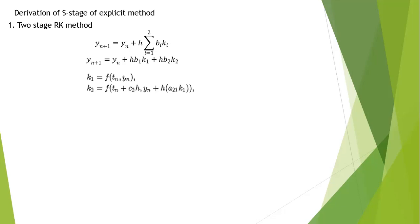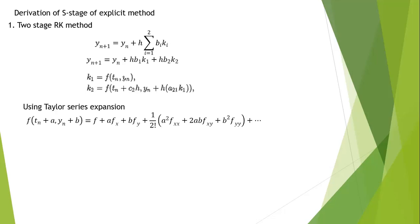We use the Taylor series expansion for multiple variables to expand k₂. From the multi-variable Taylor expansion, f(t_n plus a, y_n plus b) equals f plus a·f_t plus b·f_y plus (1/2!)·a²·f_tt plus ..., and so on. Since we are working on a two-stage Runge-Kutta method, we stop at the second-order terms. So for k₂, we get: f plus c₂h·f_t plus h·a₂₁·f_y.